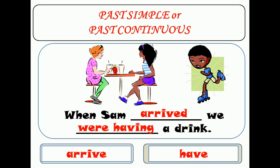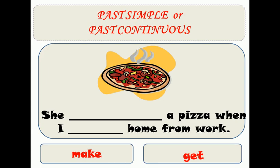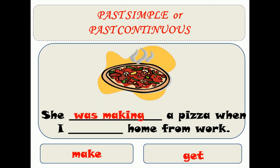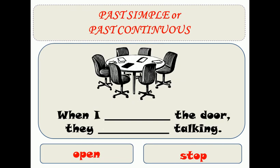The action was interrupted by the arrival of Sam. Second example: she was making a pizza when I got home. As you can see, when you want to make a pizza it takes a long time, but when someone gets home, that is a short action.